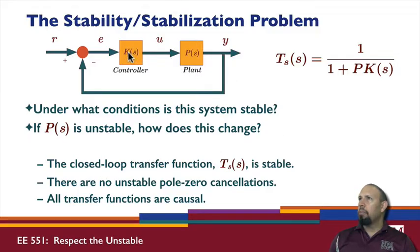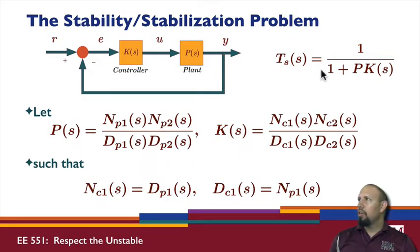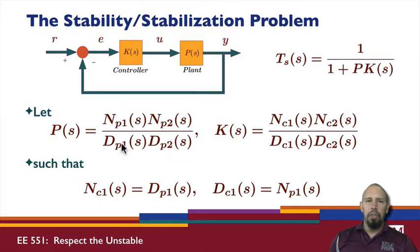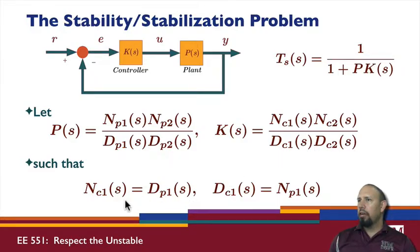I'm going to break this down in terms of the transfer function numerator and denominator polynomials. The plant is factored into two parts — the denominator factored into two parts — and we look at these in terms of stability. I'll assume that NP1 and DP1 are stable. The controller is then given by an expression where the numerator has two parts and the denominator has two parts, and we choose the numerator and denominator of the controller so that certain terms cancel.